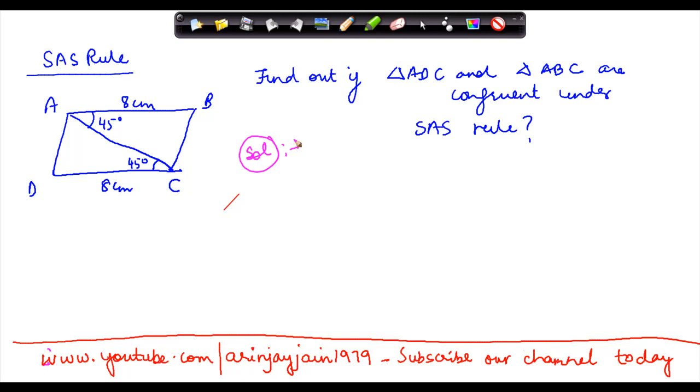Okay. So we have been told that there are two sides, namely AB and DC, which are equal.